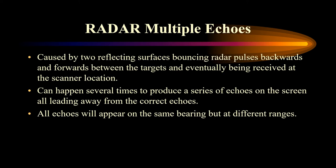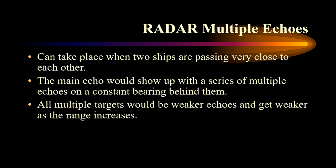Multiple echoes are caused by two reflecting surfaces bouncing a radar pulse backwards and forwards between the targets and then eventually being received at the scanner location. This can happen several times to produce a series of echoes on the screen all leading away from the correct echoes. Thus the echoes all appear on the same bearing but at different ranges. It could occur when two large ships are passing very close to one another, and the two actual echoes would appear on the screen with a series of multiples on a constant bearing behind them.